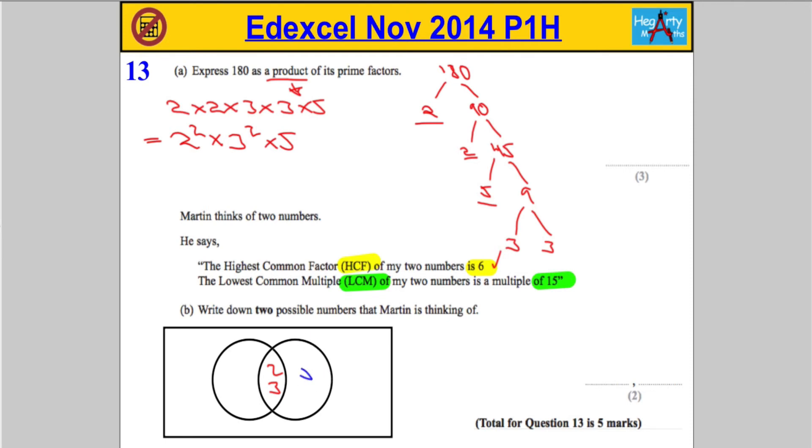How about 5? 2 times 3 is 6. 6 times 5 is 30, and 30 is a multiple of 15.